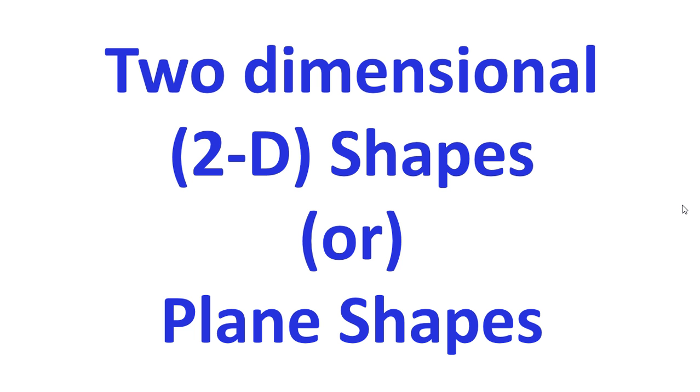What are two-dimensional shapes? The circles, triangles, rectangles, oval and squares are called plane shapes or two-dimensional shapes.